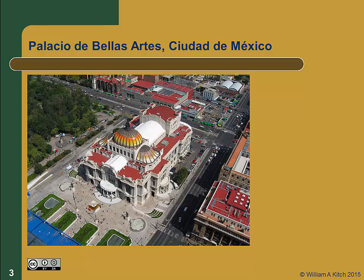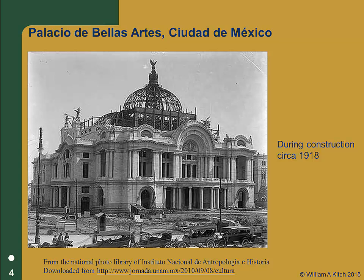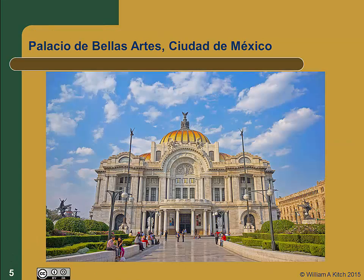One of the most famous buildings in Mexico City is the Palacio de Bellas Artes. This steel structure with a masonry facade was constructed over a three-decade period at the beginning of the 20th century. By 1950, the entire structure had settled more than 3 meters. This photo was taken during construction — notice the steps leading from the street level up to the main entrance. Here's a photo from 2012 taken from the plaza in front of the Palacio. There are still a few steps leading up to the entrance, but they're well below the original ground surface. Fortunately, the settlement was relatively uniform across the entire area of the building, and it hasn't suffered structural distress.